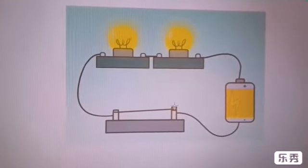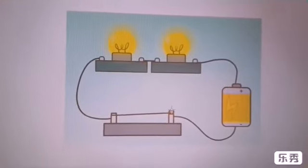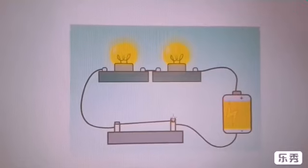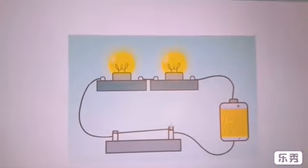You can see we have added one more bulb to the circuit. The bulbs shine less brightly when you add more bulbs to the circuit. If you have too many cells in the circuit, the bulbs pop or burn out.